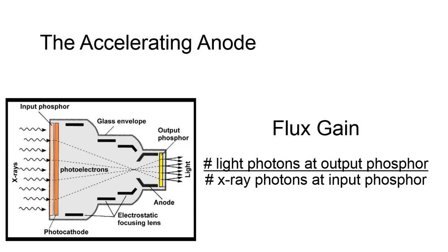Once the electrons reach the output phosphor, they undergo another energy transfer back to visible light. The ratio of the number of light photons emitted by the output phosphor to the number of X-ray photons striking the input phosphor is referred to as flux gain.